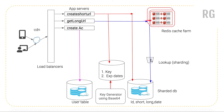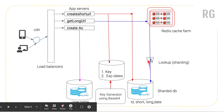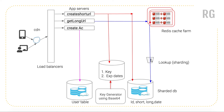The get long URL service takes a short URL and returns the long URL. The request first goes to the Redis cache to check if the long URL already exists for the given short URL. If it's not there, it queries the database, brings back the long URL to the UI, and also stores it in the cache. Next time the same request is made, it fetches directly from Redis cache instead of querying the database again, which improves performance.